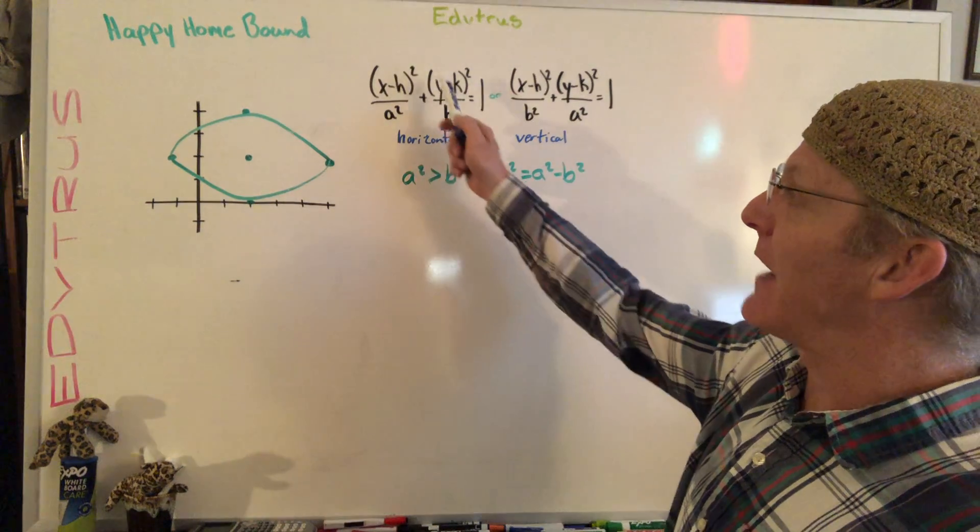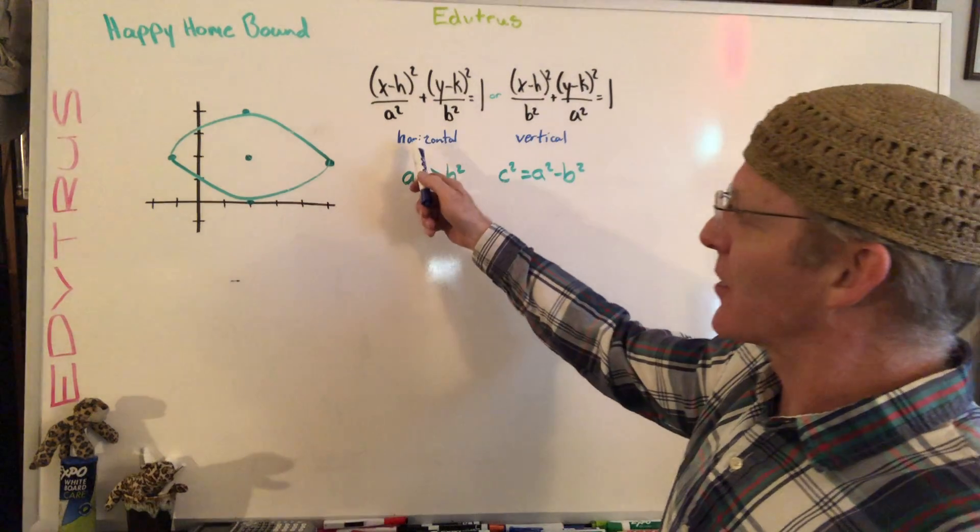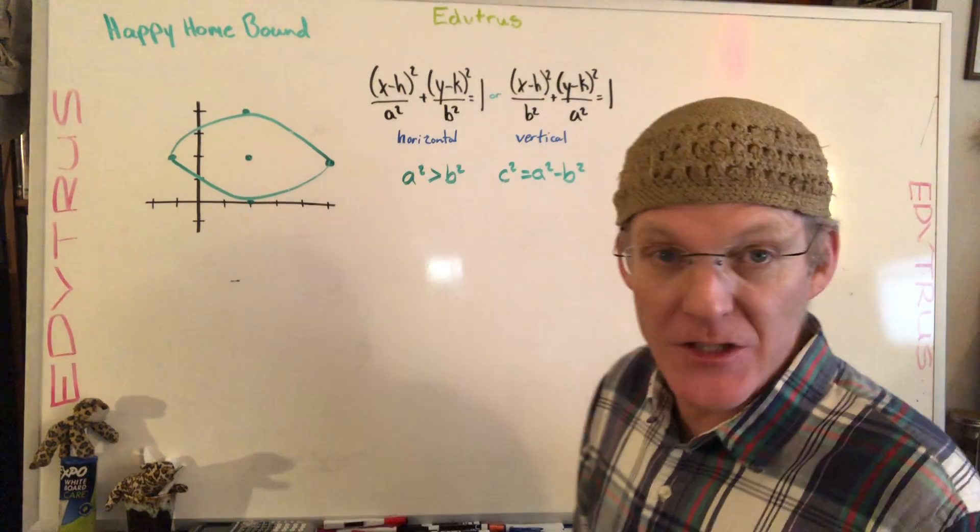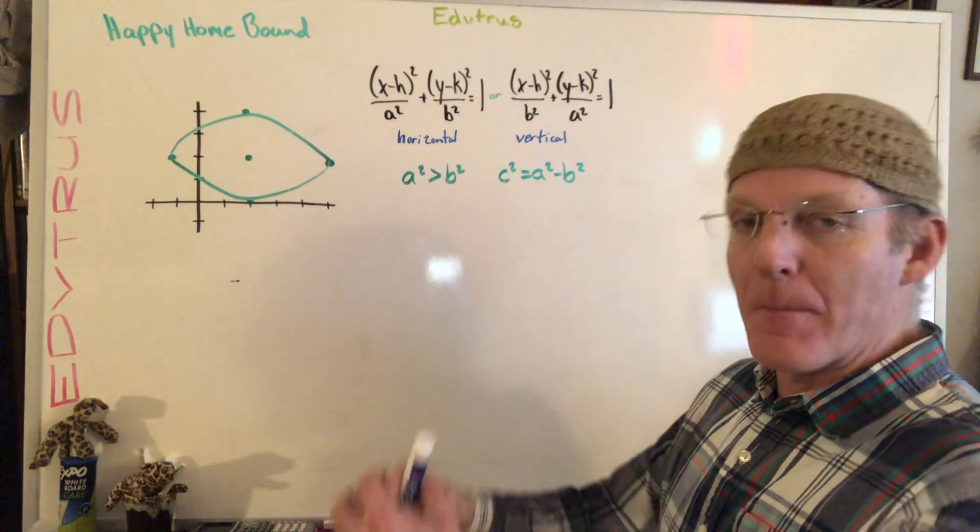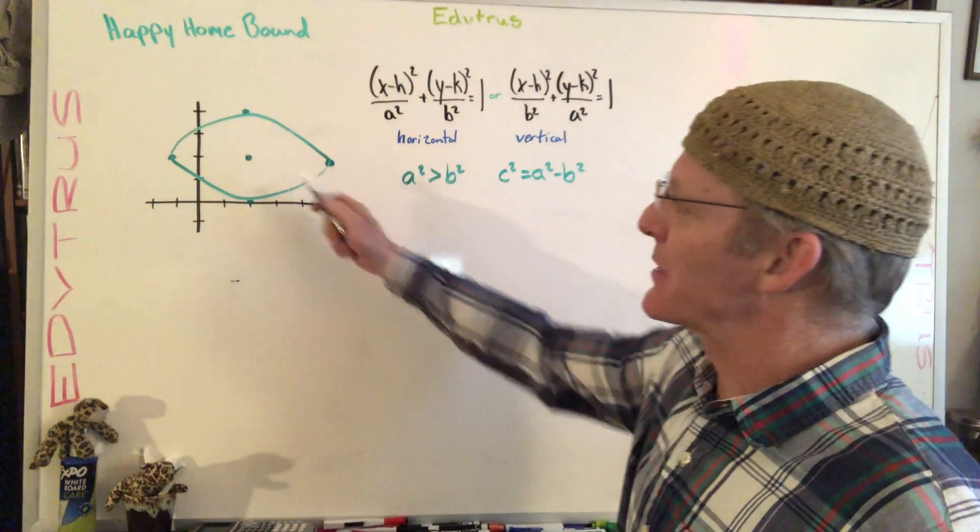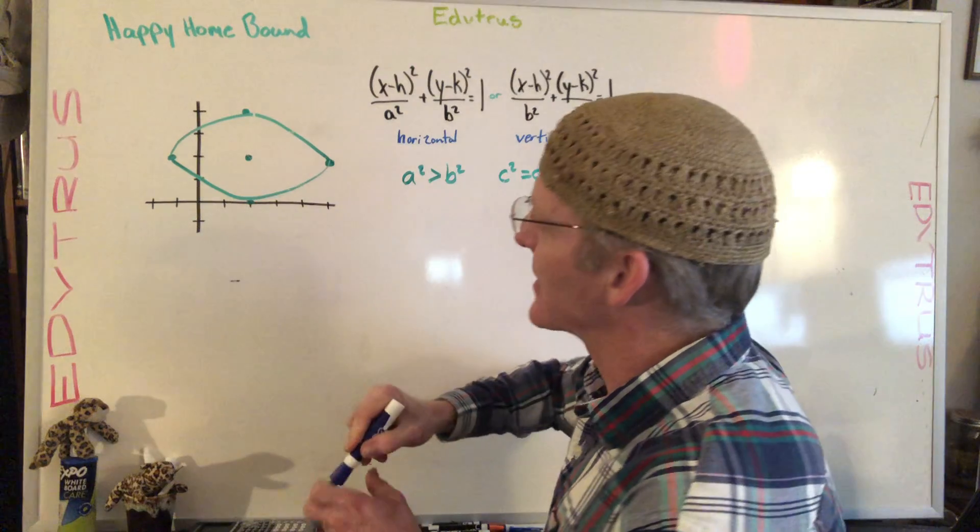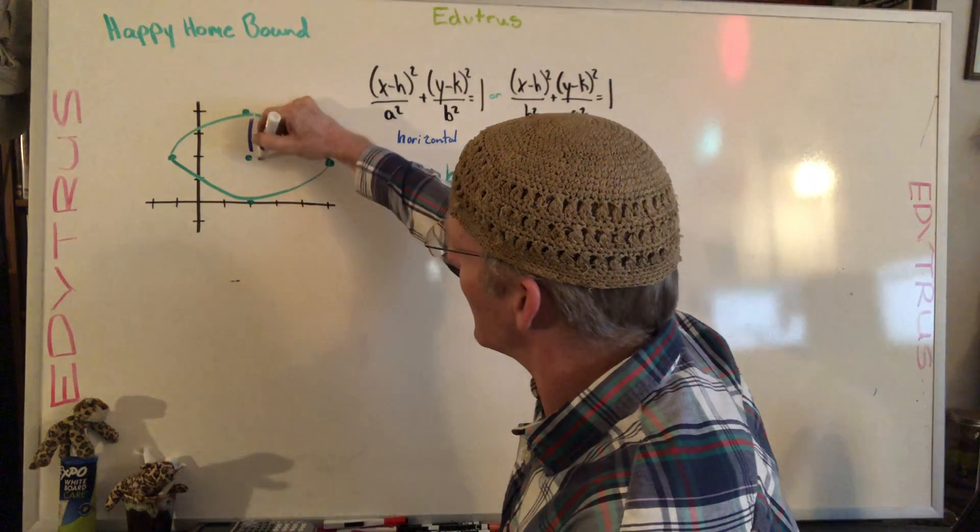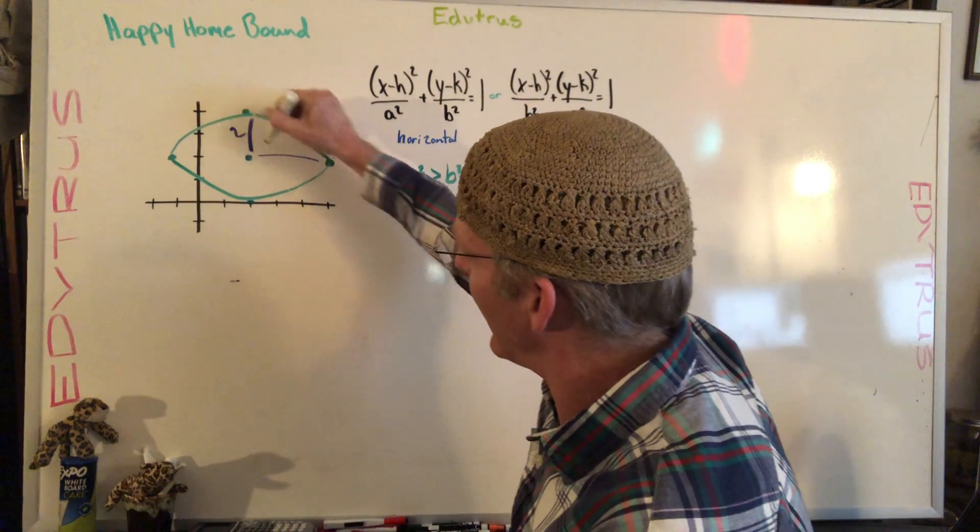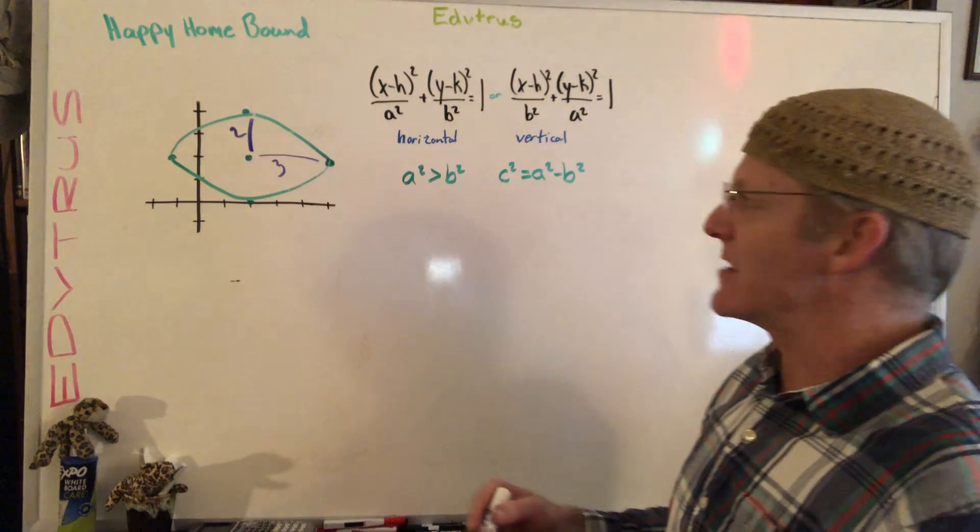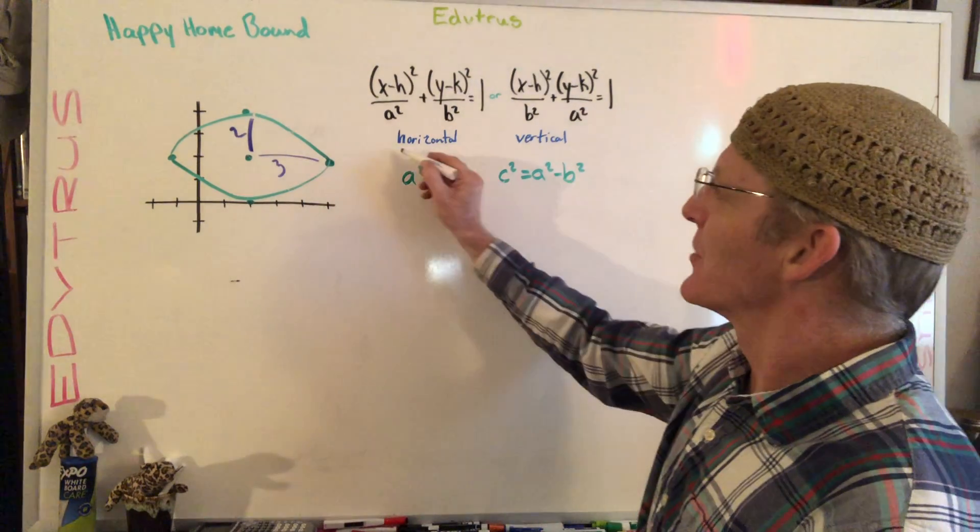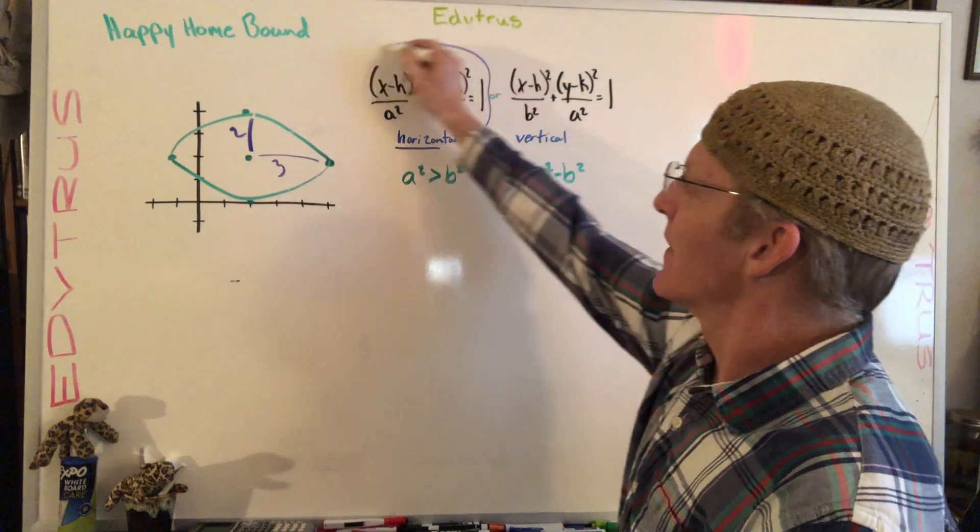Remember, we're going to have these two forms - it's either going to be horizontal or vertical. One of the first things you should determine is the major axis. In this case we can see this is 3 and this is only 2, so the major axis is horizontal, so we're definitely going to use this form of the equation.